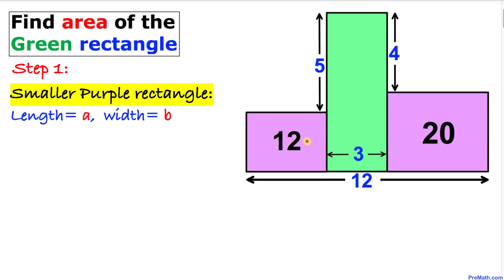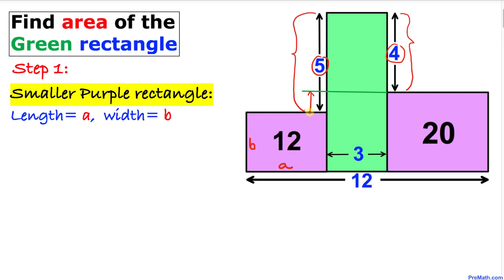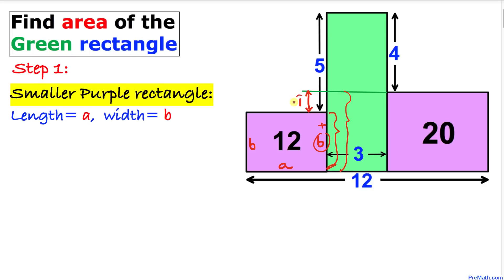In our very first step, let's focus on the smaller purple rectangle. I am going to call its length 'a' and its width 'b'. Now let's focus on the heights. We know this is 4 units, this whole thing is 5, so their difference is 1. We know this distance is b, so the total distance here is b plus 1.